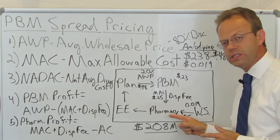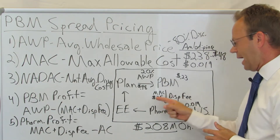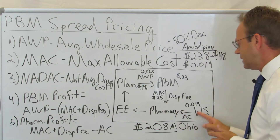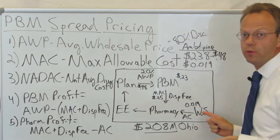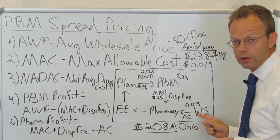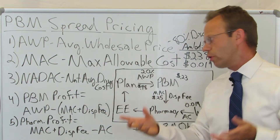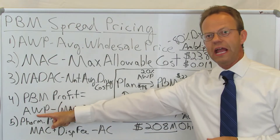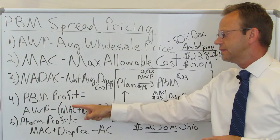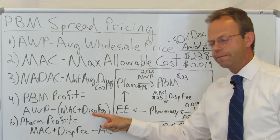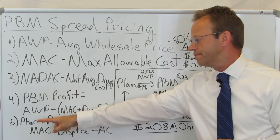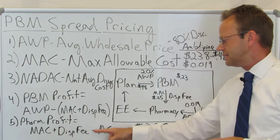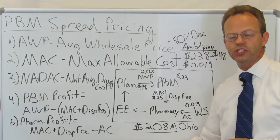The pharmacy's revenue in turn is the MAC plus the dispensing fee. And then the pharmacy's cost is the acquisition cost from the wholesaler. So the PBM's profit is the AWP minus the MAC plus the dispensing fee. And then the pharmacy's profit is the MAC plus the dispensing fee minus the acquisition cost.